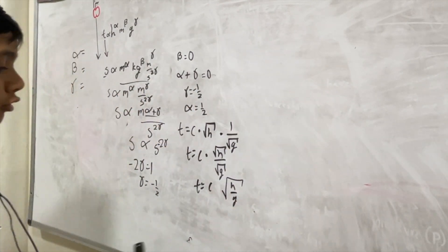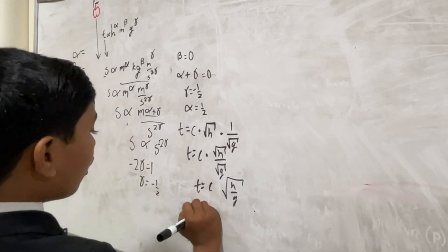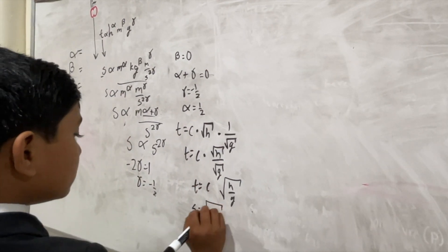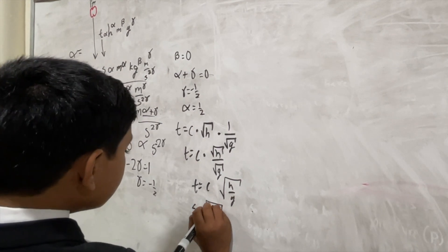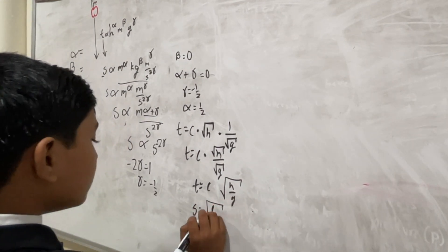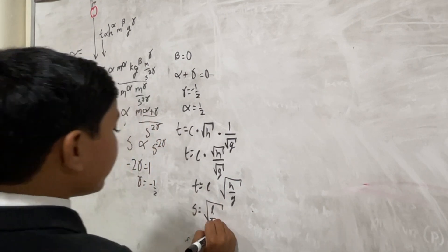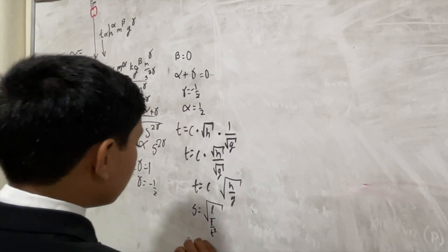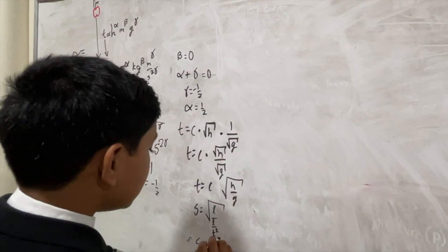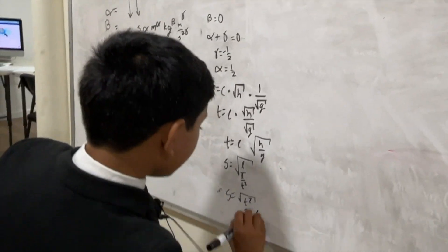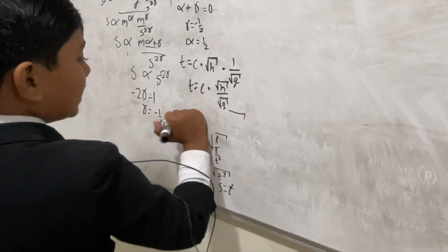And, if you do reverse dimensional analysis, it all works out. So, constant has no unit, height is just length, over g, which is length over time squared. So, that simplifies to s equals root t squared, s is t, time and a half seconds, boom, works out.